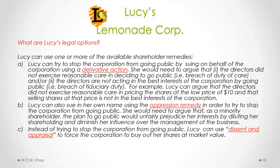The third remedy Lucy can consider is dissent and appraisal. Instead of trying to stop the corporation from going public, Lucy can use dissent and appraisal to force the corporation to buy out her shares at market value — basically asking to be cashed out and walking away from the corporation.